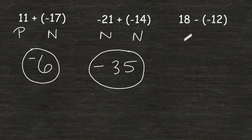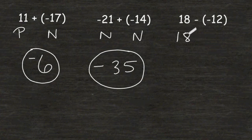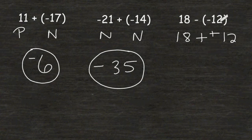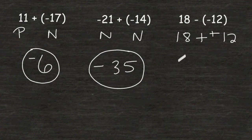By now we should recognize that when we have a minus sign immediately followed by a negative integer, we have to rewrite that using both positives. We have to write the opposite of negative 12, which is to add 12. So now we have two positive integers, a basic addition problem. We can just add 18 and 12 together, which gives us positive 30.